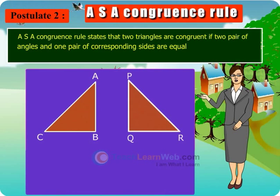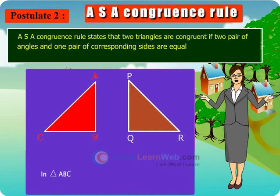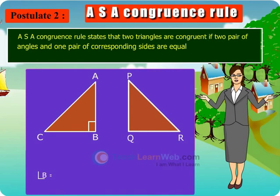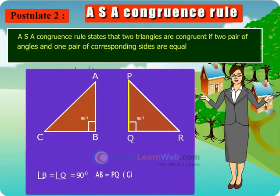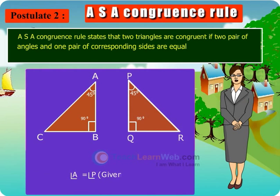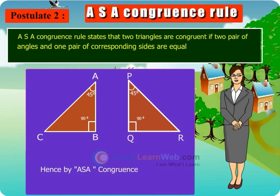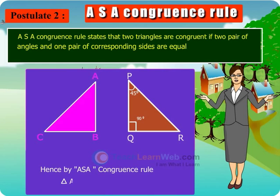Children, observe the given two triangles. In triangle ABC and triangle PQR, angle B is equal to angle Q is equal to 90 degrees. AB is equal to PQ (given), and angle A is equal to angle P (given). Hence, by ASA congruence rule, triangle ABC is congruent to triangle PQR.